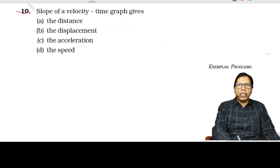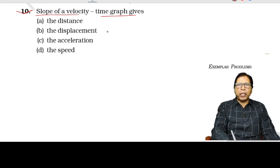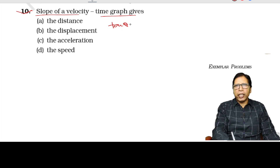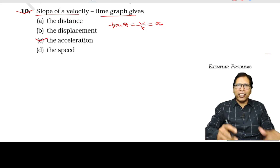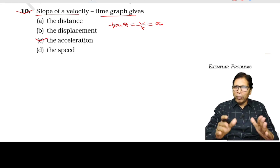Question number 10: the slope of a velocity-time graph gives — tan θ = V/T = acceleration. So the slope of the velocity-time graph gives the acceleration.